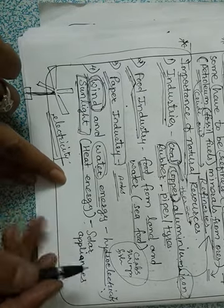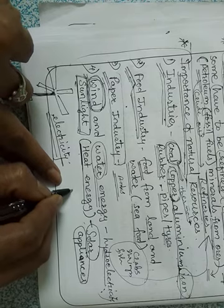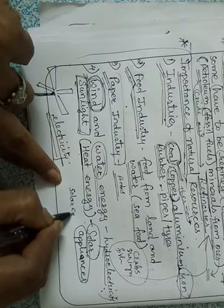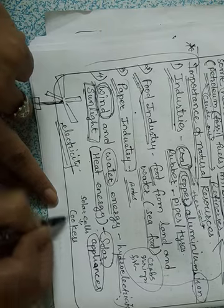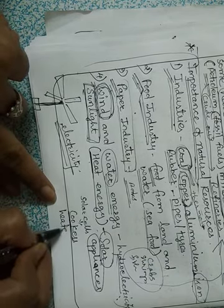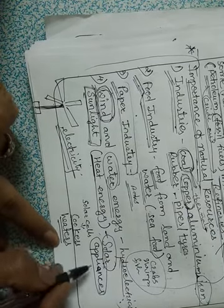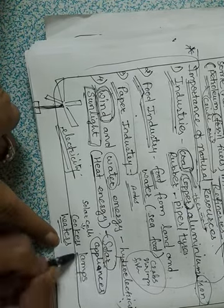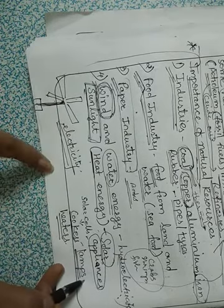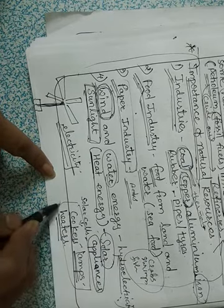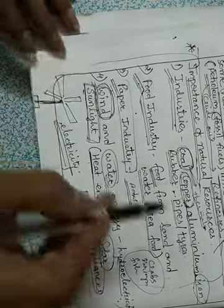Sunlight is also used to run different appliances using the heat energy of the sun. These are called solar appliances. You may know about solar cells used in calculators and watches, solar cookers used to cook food, solar heaters used to heat water, and solar lamps. All these appliances use solar energy, that is sunlight.